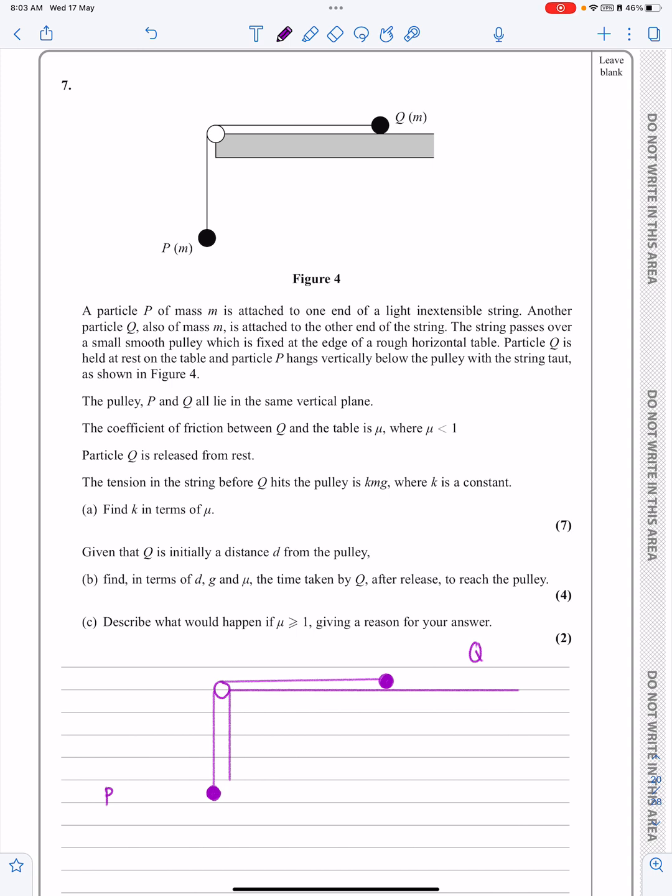It says particle Q is released from rest, and then this is the slight difference: it tells me that the tension in the string is Kmg rather than just being T, and it says find K in terms of mu. So straight away I know there's going to be a lot of algebra involved. Let's get started.